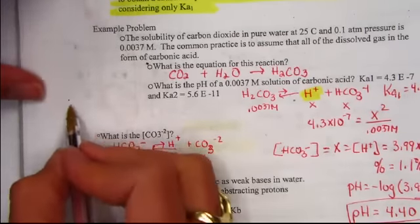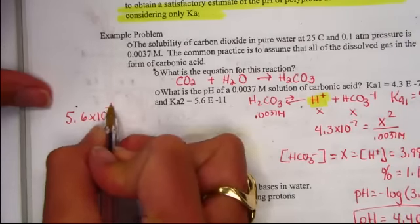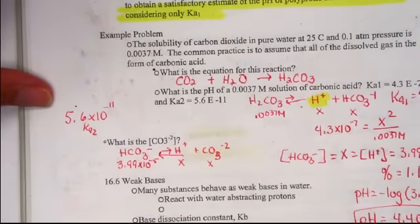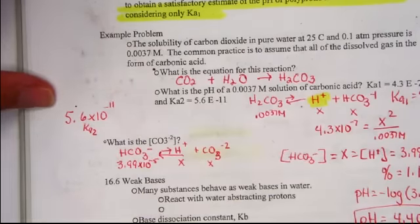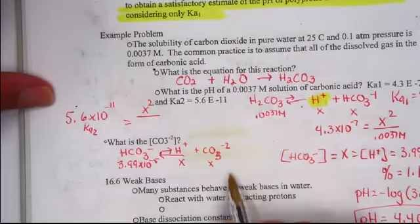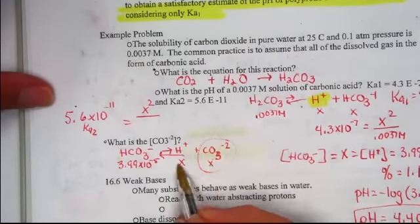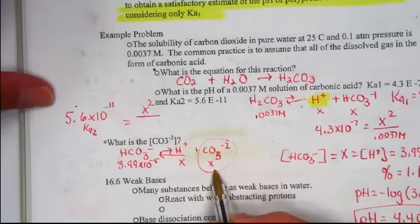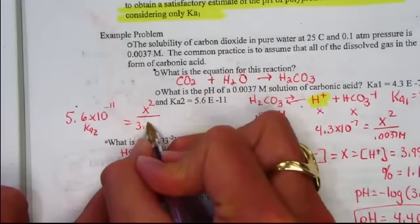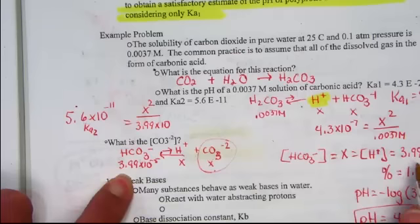I'm going to set this up here. Ka2 of 5.6 times 10 to the negative 11th, either from our appendix D or provided here in the problem, is going to be equal to X squared. This is what we're trying to find, the carbonate, X squared because there's two equal quantities of ions over the bicarbonate ion which was our answer to the previous problem, X.